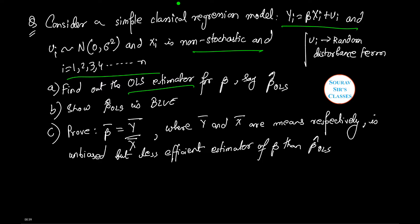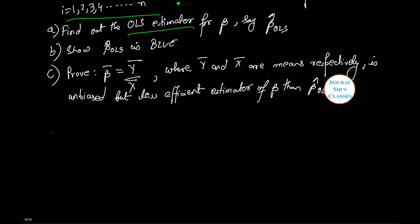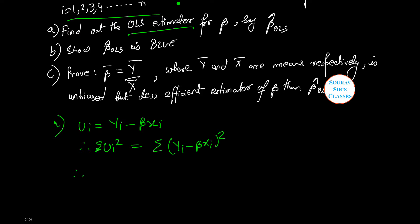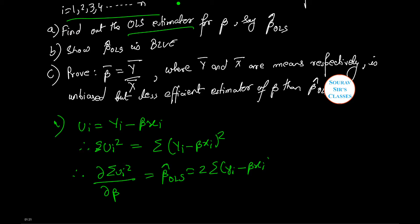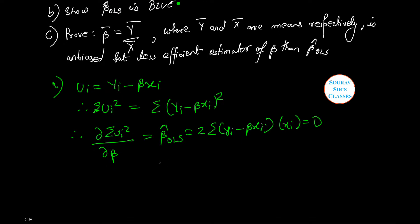Now we need to first find the OLS estimator of beta, say beta OLS cap. Let us start off with part A. Therefore u_i equals y_i minus beta x_i. Therefore, summation of u_i squared equals summation of (y_i minus beta x_i) whole squared. Taking the derivative of summation u_i squared with respect to beta cap OLS equals 2 summation (y_i minus beta x_i) times x_i equals 0. Now equivalently summation y_i equals beta x_i, as summation u_i equals 0.